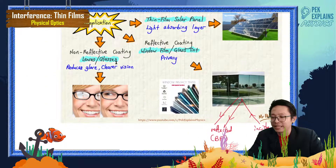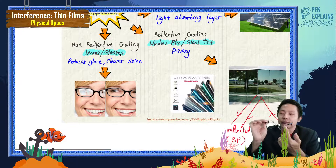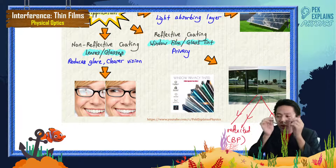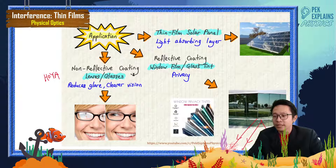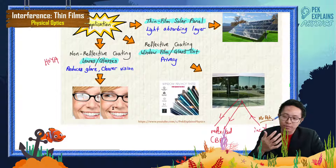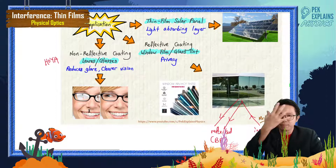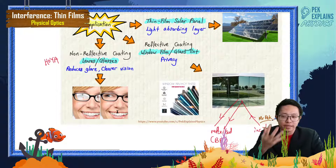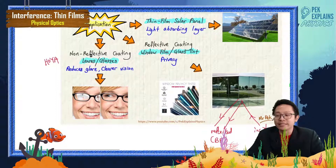Now for non-reflective coating — this is used for lenses or glass. Sometimes we call it Hoya technology. This thin film reduces glare and gives clearer vision. Looking at two images of a person, you prefer the one on the right because you can see the face clearly. The non-reflective coating reduces reflected light, giving a clearer, more striking view.